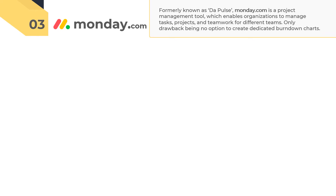Formerly known as the Pulse, Monday.com is a project management tool which enables organizations to manage tasks, projects, and teamwork for different teams including Scrum teams. This tool's capacity to deliver on projects and tasks for Scrum teams is uncanny. Monday.com has an intuitive interface that's not only visually appealing but also places everything right where it needs to be. The only drawback is that you will not be able to create a dedicated burndown chart to track the progression of the sprints.